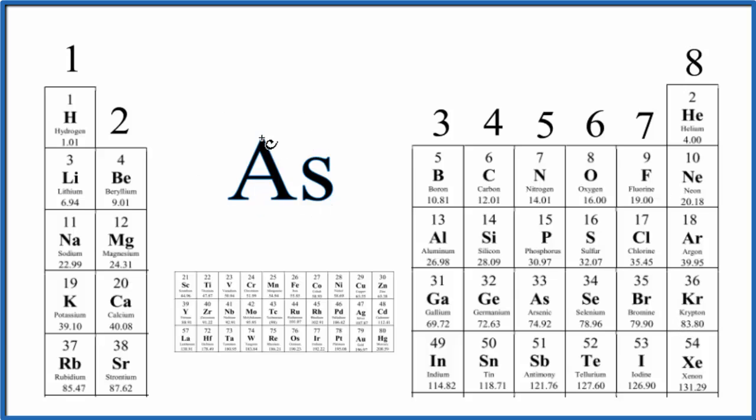We find arsenic and then we can write its Lewis structure. Arsenic is right here. It's in group 15, sometimes called 5A. That means it has five valence electrons. So we'll put five valence electrons around this element symbol here. This is the Lewis structure for As, arsenic.